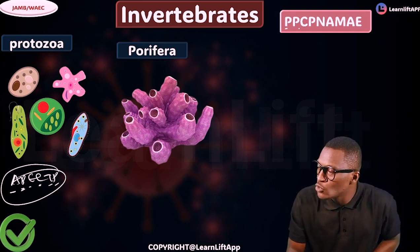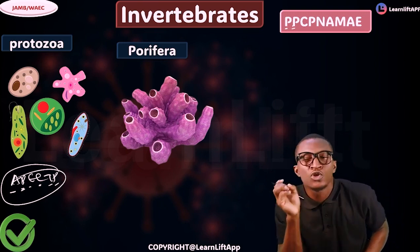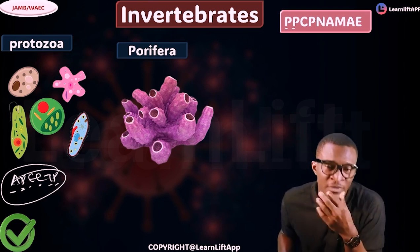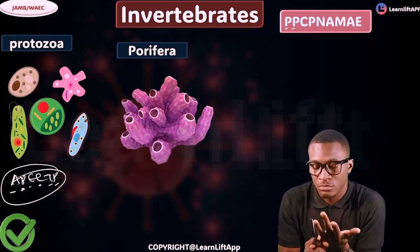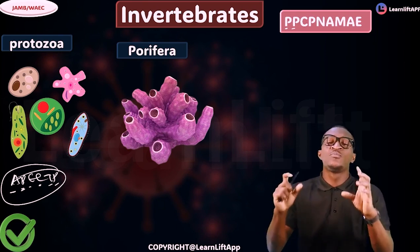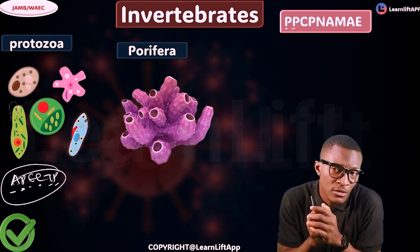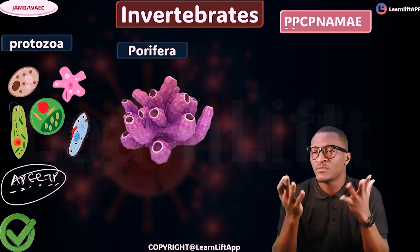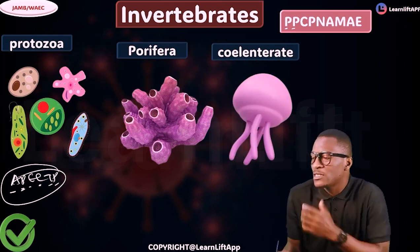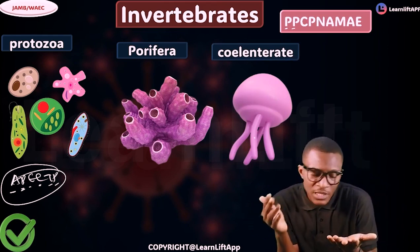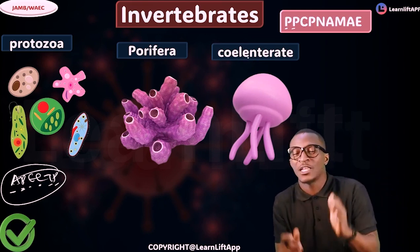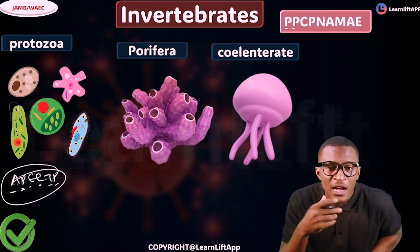The next one is Coelenterata — also called Cnidarians. Under Coelenterata we have jellyfish, sea anemones, corals, and Hydra. They are the most beautiful animals of the sea. If you've watched a movie and seen the bottom of the sea — those beautiful creatures — they are your Coelenterata. Hydra belongs here. We're going to teach them one after the other.